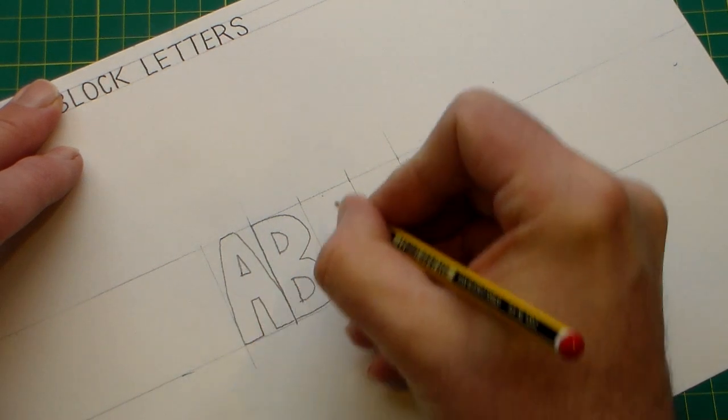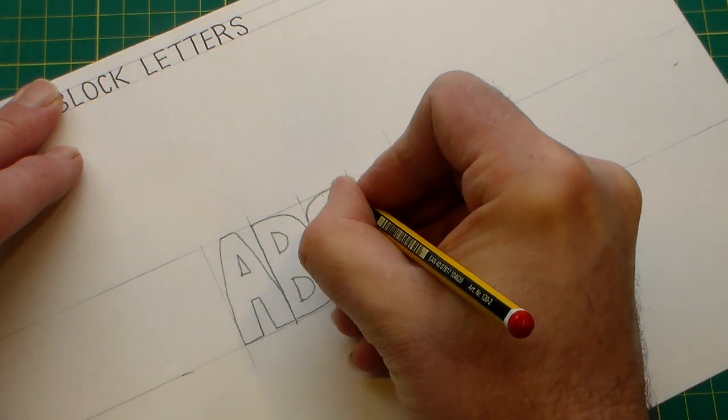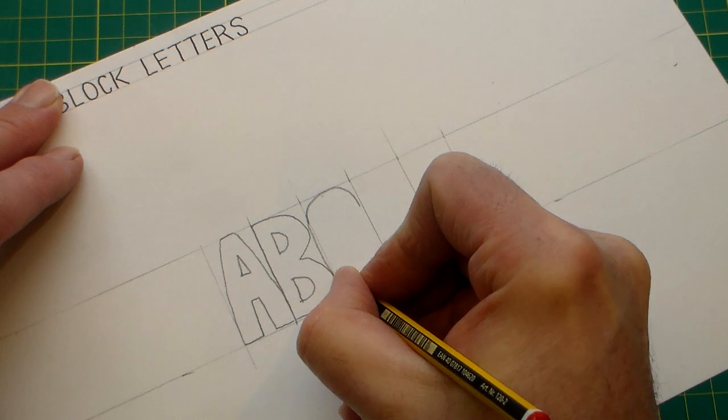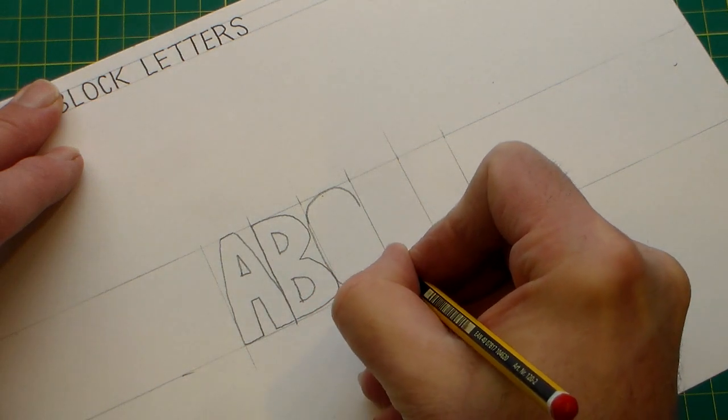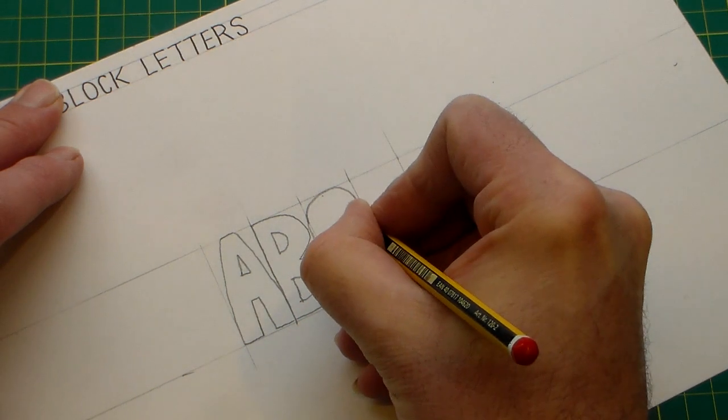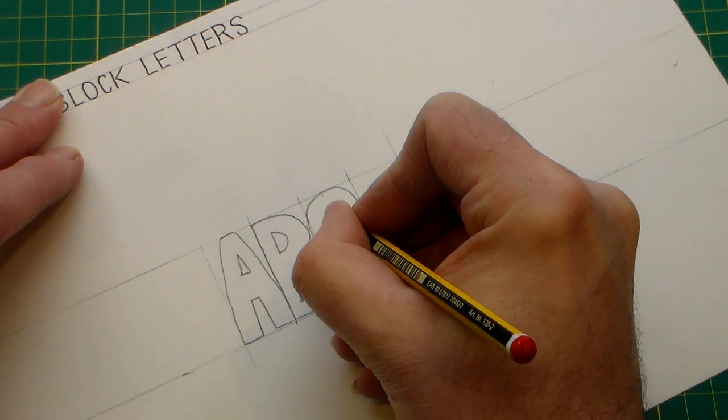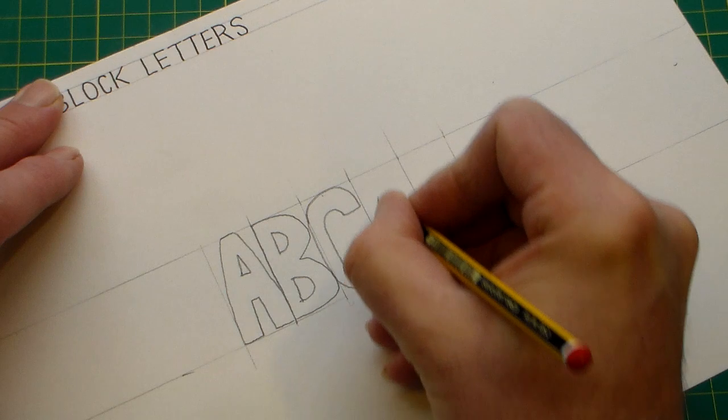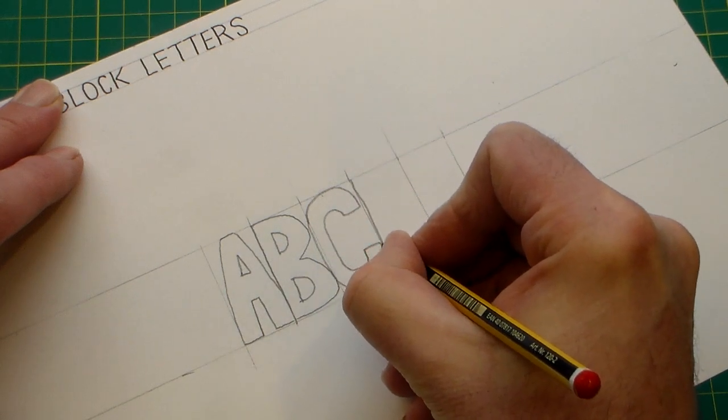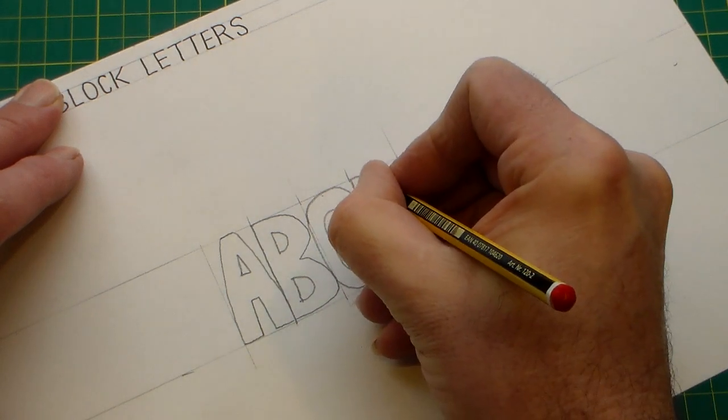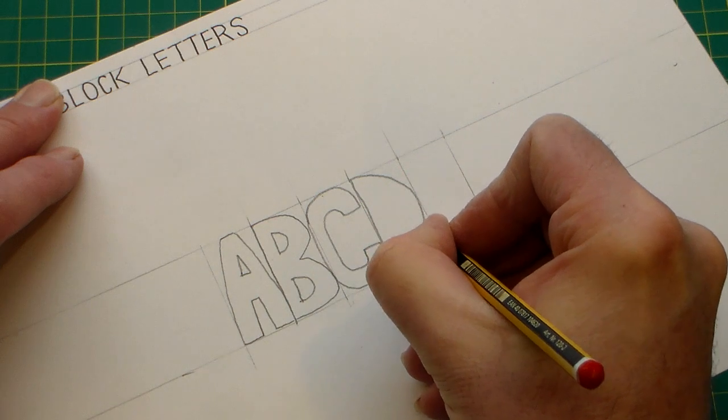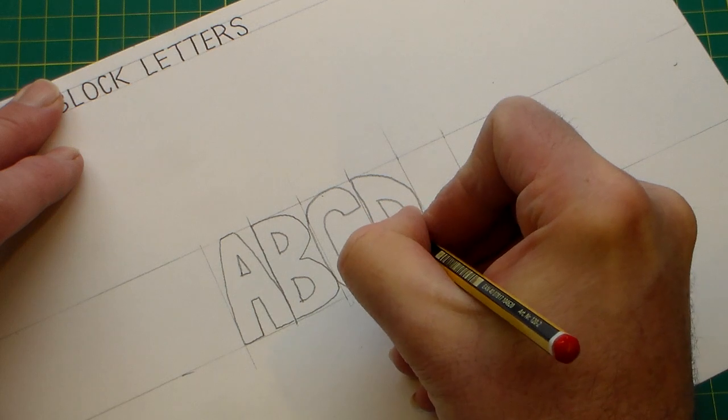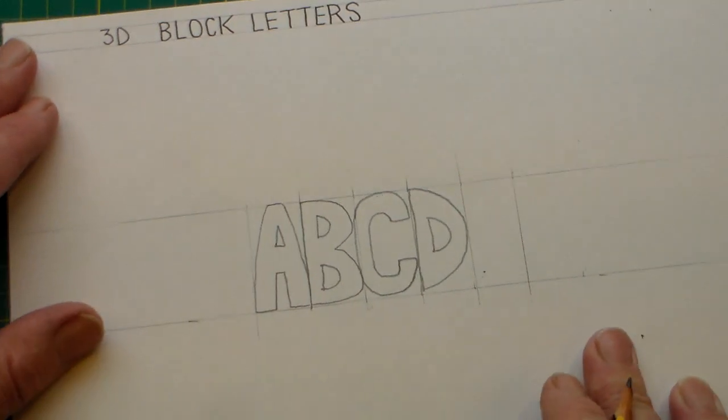So I'm just writing alphabet letters here. You could write your name. This process is basically the same process as we did with the 2D block letters.